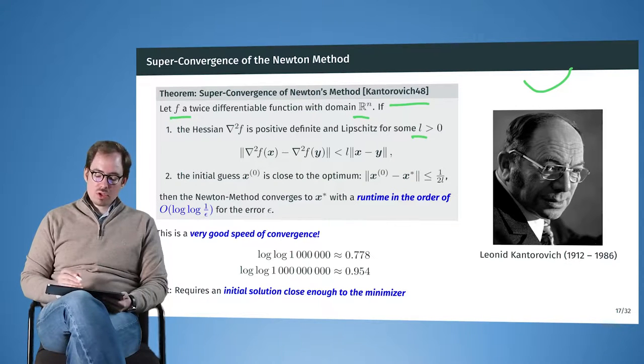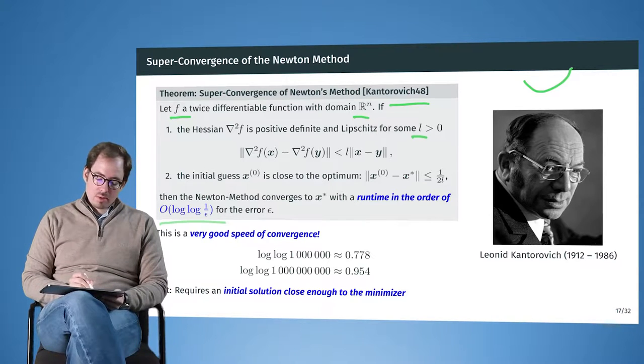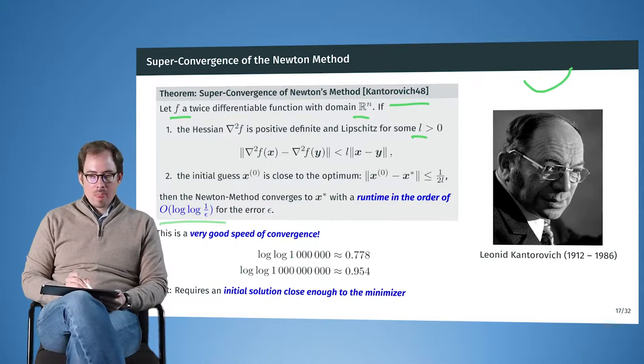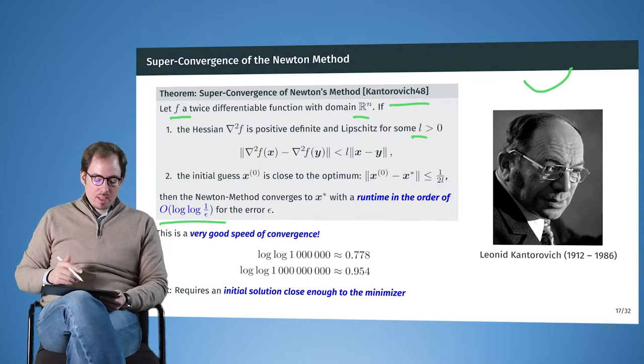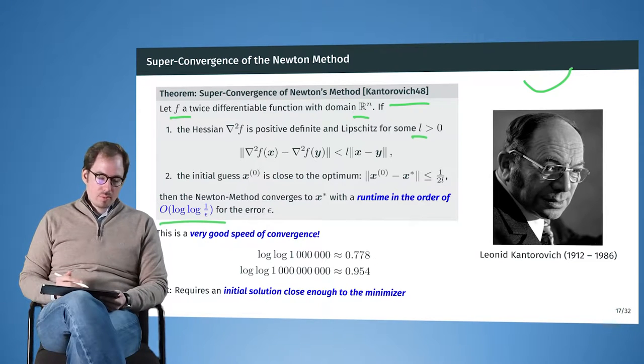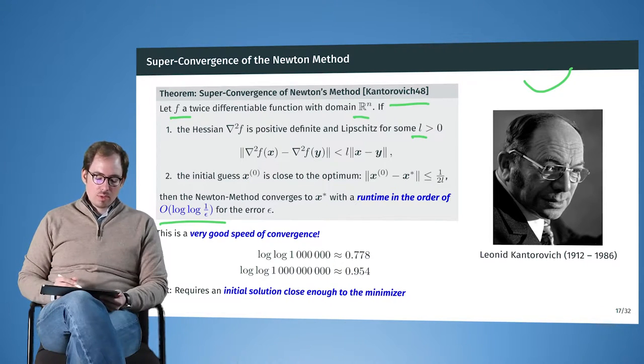And the convergence is of a runtime of the order of log log 1 over epsilon. So epsilon here is the remaining error that is still allowed. And log log 1 over epsilon is really good convergence. Because if we reduce the error by times 1000, in many cases, this only increases the number of Newton method iterations that we need to take by one or maybe two.